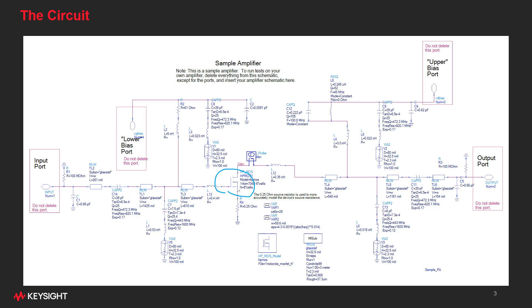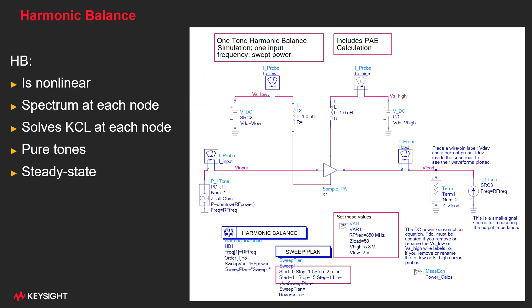If we ran a harmonic balance analysis on this circuit, it would go into a test bench that looks like this. This is harmonic balance in ADS, the Advanced Design System product from Keysight. The circuit we just saw is inside this symbol of the power amplifier.